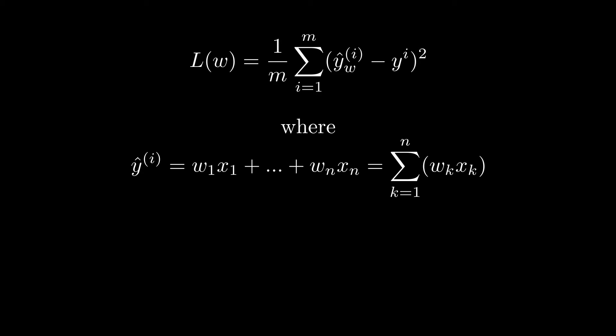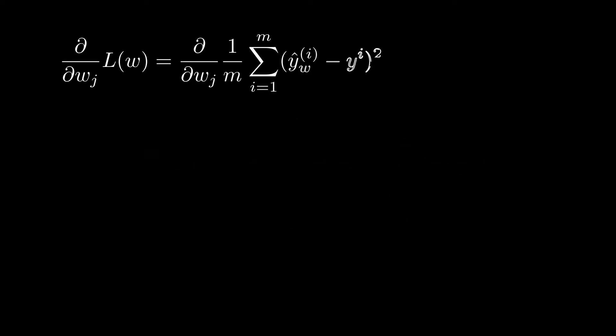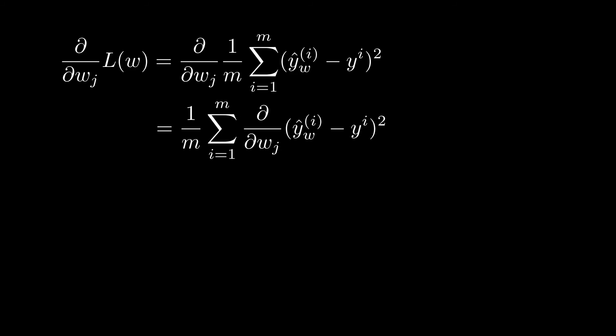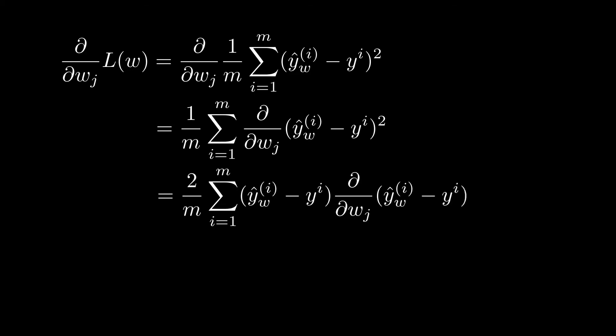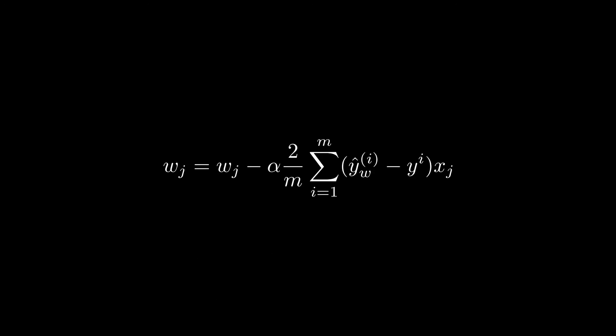The question is then how can we minimize the loss function. One way is to use gradient descent using the following formula. We want to find the gradient of the loss with respect to a specific weight w_j. Moving the derivative sign inside the sum, we see that ŷ is dependent on w, and we utilize the chain rule. The inside derivative will in this case just be x_j. The update rule for gradient descent then looks like the following.